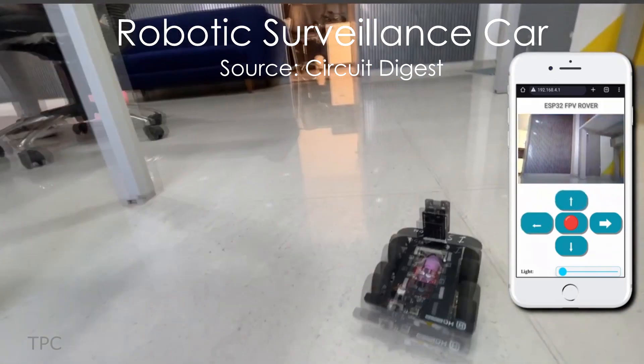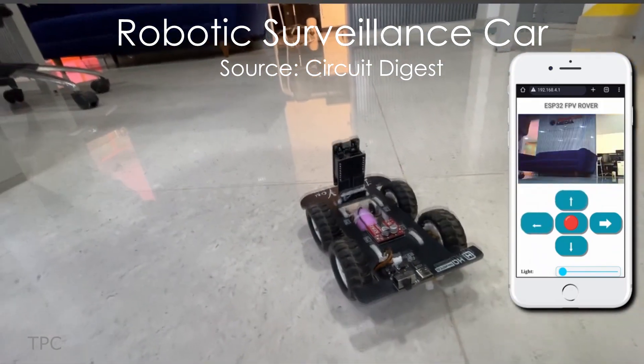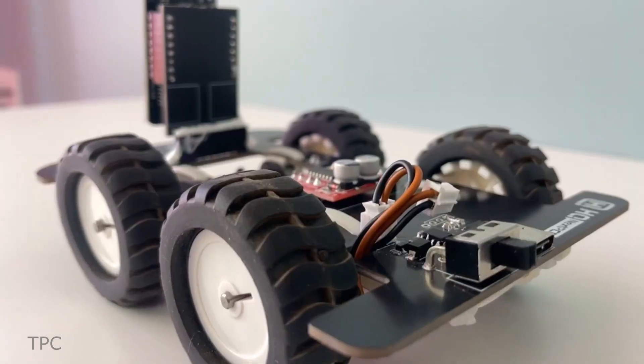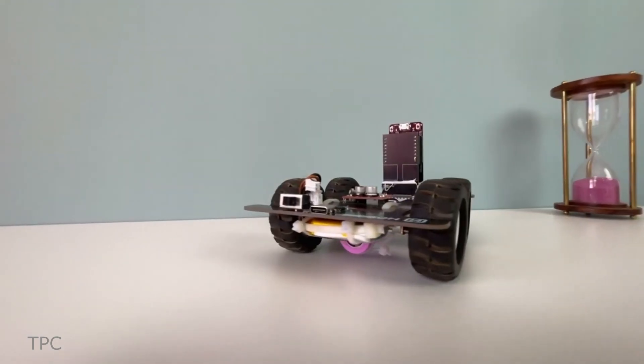Number 10. A surveillance robot is most effective when it is tiny, has minimal components, and is fast. The Circuit Digest team considered all these factors in creating this spy car.